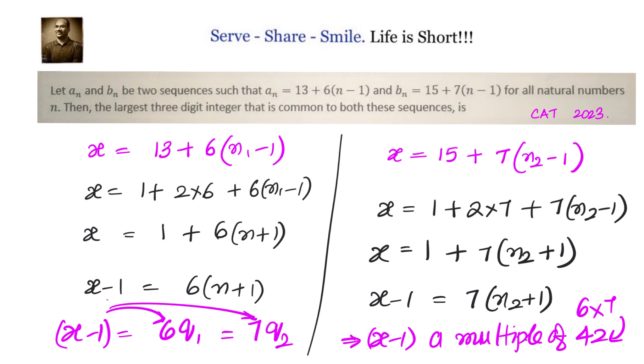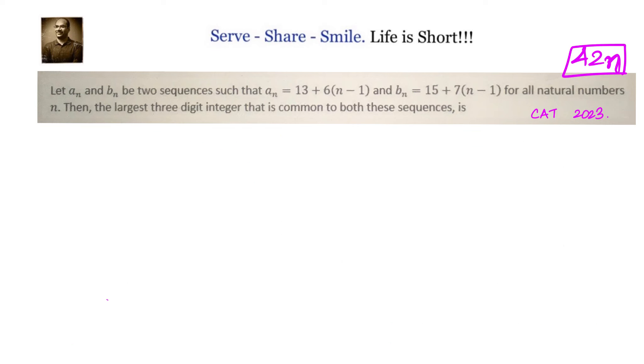Now we know that x minus 1 is in the form of 42 into some natural number n. The largest 3-digit integer is less than 1000, so it should be less than or equal to 999. Now 42 into 24 equals 1008, and 42 into 23 equals 966.